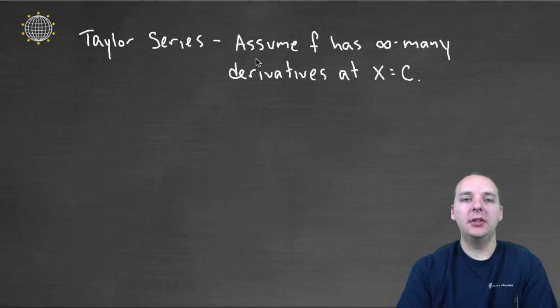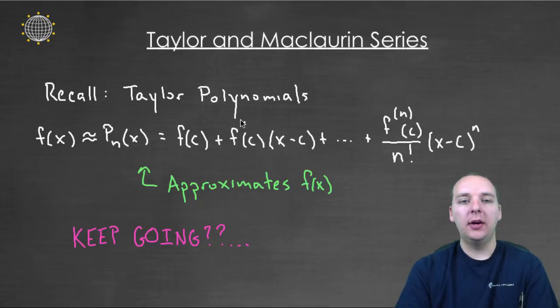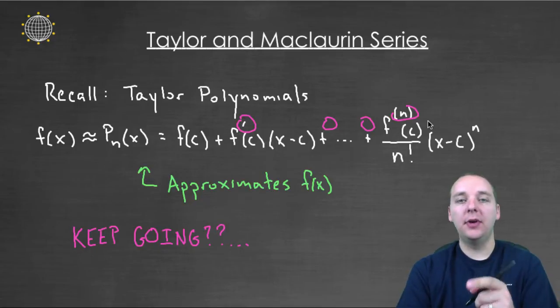Alright so for a Taylor series, let's assume that our function has infinitely many derivatives. Because if you want to continue this pattern of adding more and more terms, with every subsequent term you're going to need another derivative. The first derivative, then the second derivative, then the third derivative, and the tenth derivative. So if you want to do this forever, you have to have that many derivatives available.